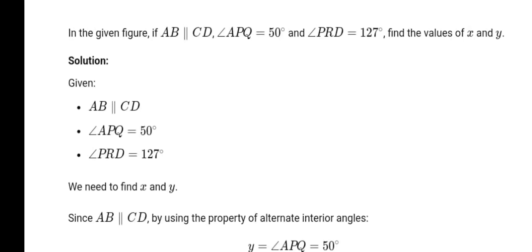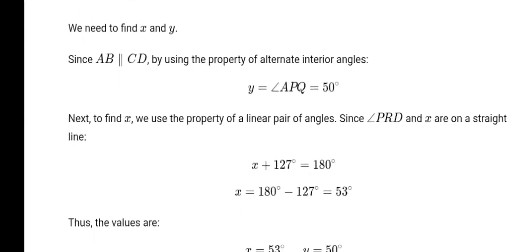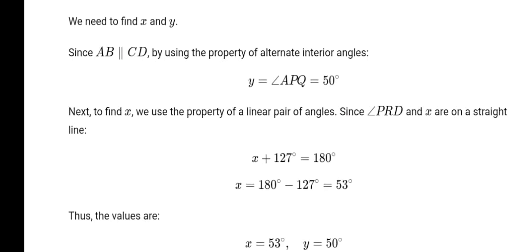2. If two lines intersect each other, then vertically opposite angles are equal. Answer, true.